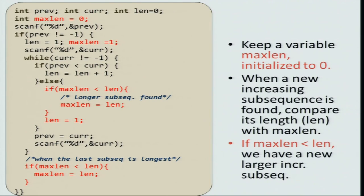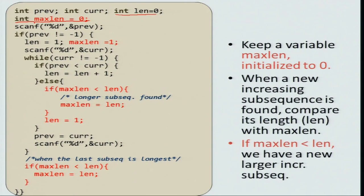Let us modify the program a little bit. Earlier we reasoned that we need at least three variables, but now in order to keep track of the maximum length seen so far, I need a new variable: max length equal to 0. When we start the program, we have not seen any increasing subsequence, so both length and max length are initialized to 0. Then you scan the new number; if it is not minus 1, length equals 1 and max length equals 1, because the longest sequence seen so far is 1 long. You then scan the next number.